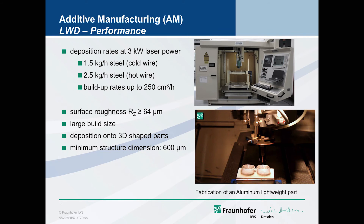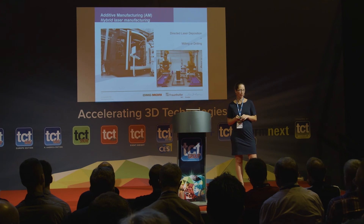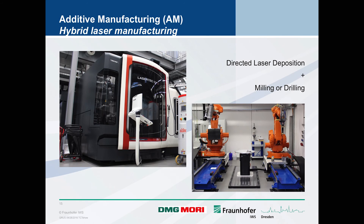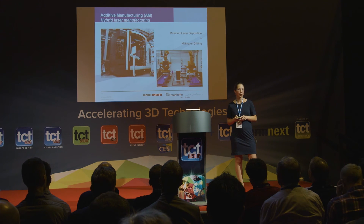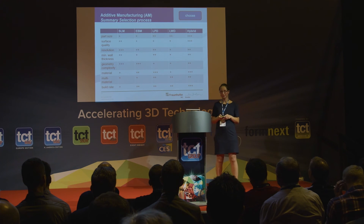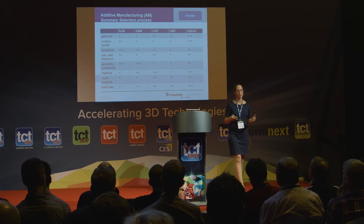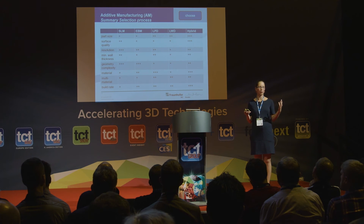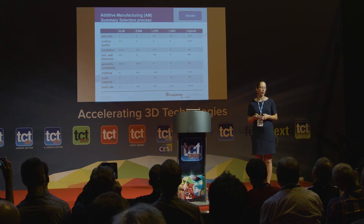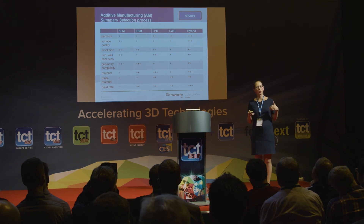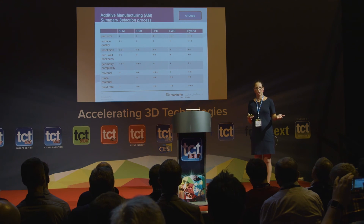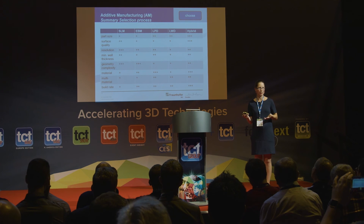Laser wire deposition offers high build-up rates and large build sizes, and one of the main advantages is you can deposit onto 3D-shaped parts, not just 2D flat substrates like powder bed processes. We also have hybrid laser manufacturing — a laser head and robot system that combines directed laser deposition with milling or drilling. Once you know all the processes, you can compare them based on part size, surface quality, resolution, wall thickness, complexity, and material, then match those to the limits and capabilities of each process and decide.